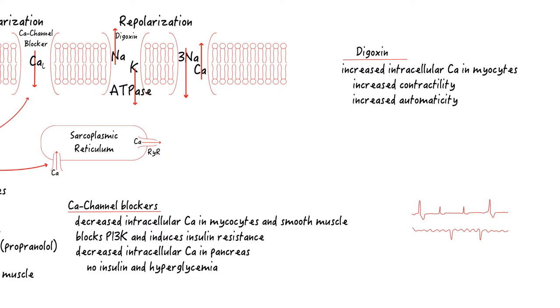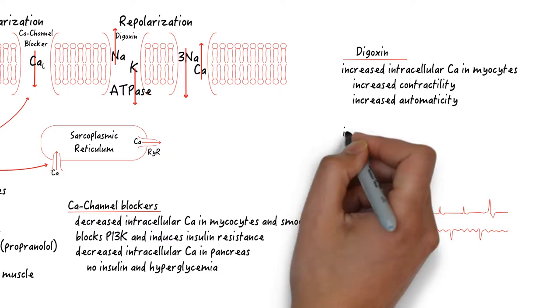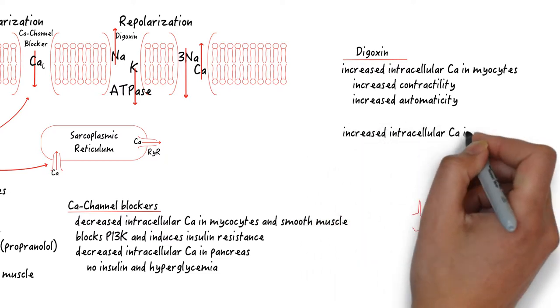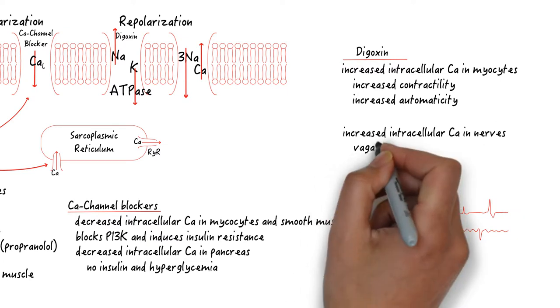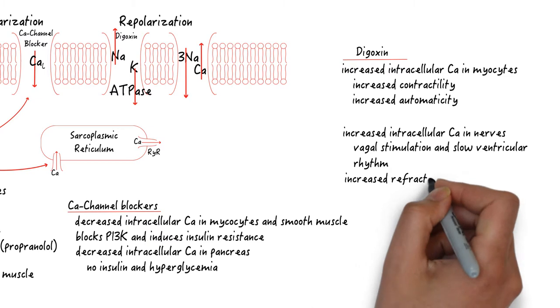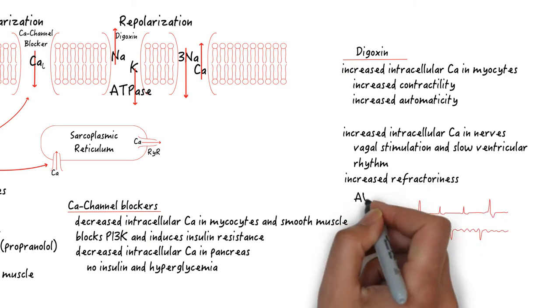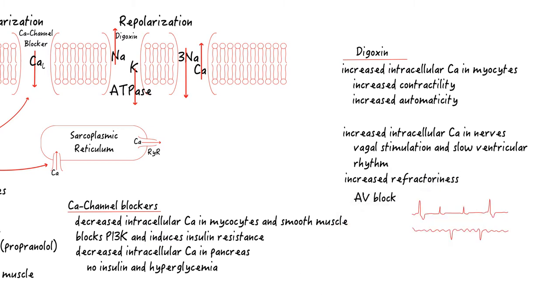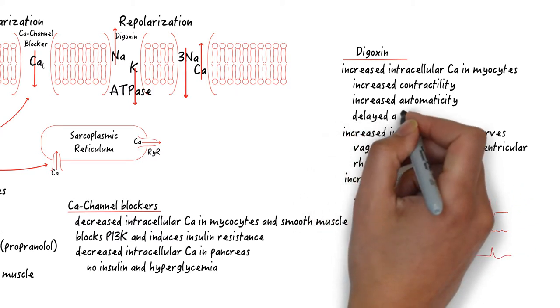However, this usually does not conduct to the ventricles because of delayed repolarization as well as increased vagal tone from increased intracellular calcium in the vagus nerves. So this will manifest as rapid atrial beats with a very slow ventricular rhythm. The delayed repolarization can also cause a very slurred and cupped ST segments.